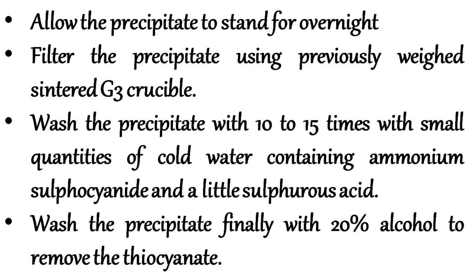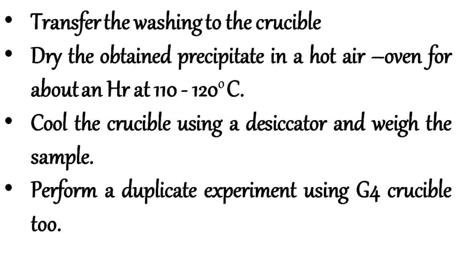Filter the precipitate using a previously weighed sintered G3 crucible. Wash the precipitate 10 to 15 times with small quantities of cold water containing ammonium sulfocyanate and a little sulfurous acid. Wash the precipitate finally with 20% alcohol to remove the thiocyanate, and transfer the washings to the crucible.